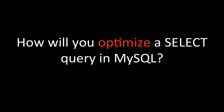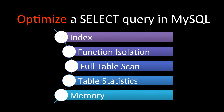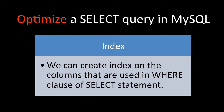So there is a SELECT query that is given to you and you have to optimize it — how can you do it? We can use the following options to increase the speed of a SELECT query in MySQL: index, function isolation, full table scan, table statistics, and memory. Let's see each of these in detail one by one.